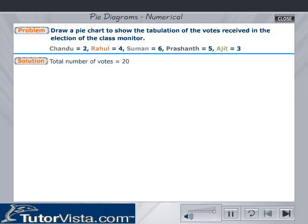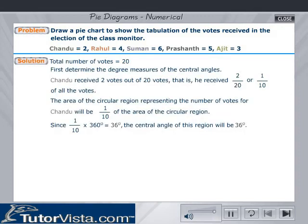Solution: Total number of votes equals 20. First, let us determine the degree measures of the central angles. Chandu received 2 votes out of 20 votes. That is, he received 2 by 20 or 1 by 10 of all the votes.